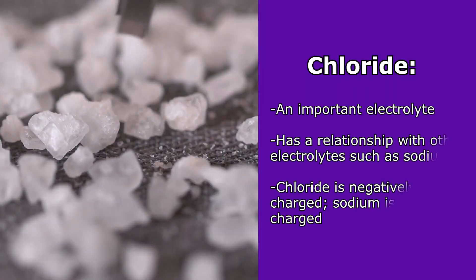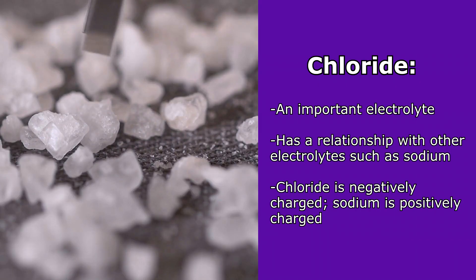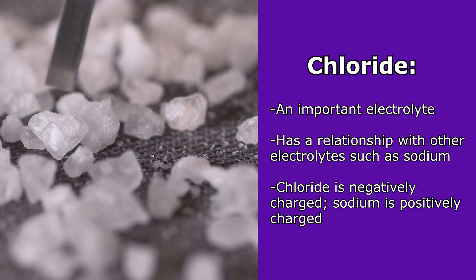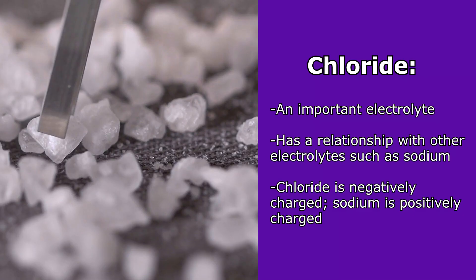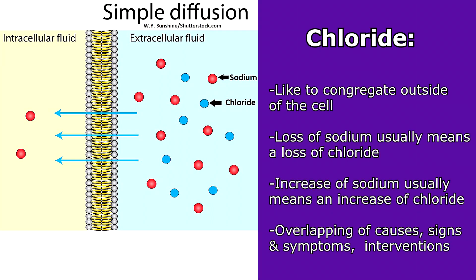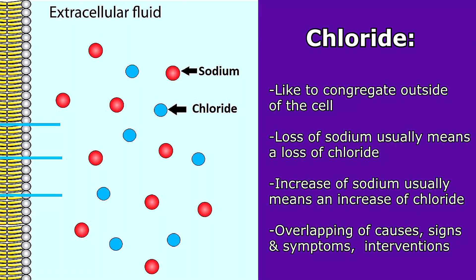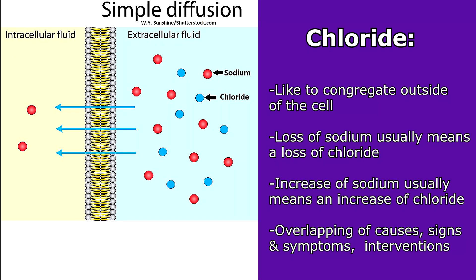Chloride is an electrolyte that has an important relationship with other electrolytes in the body, such as sodium. Chloride is a negatively charged ion while sodium is positively charged, and they both like to congregate outside of the cell. Because of this, usually if there is a loss of sodium there's also going to be a loss of chloride, and on the flip side if there's an increase of sodium there's going to be an increase of chloride. Therefore you're going to see a lot of overlapping with their causes, signs and symptoms, and interventions.